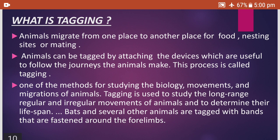Now we will look at a small term — what is tagging? Animals migrate from one place to another for food, nesting sites, or mating. Animals can be tagged by attaching devices which are useful to follow the journeys animals make. This process is called tagging. Tagging lets scientists follow the journeys animals make and is one of the methods for studying the biology, movements, and migration of animals, to determine their lifespan and track long-range and irregular movement. Bats and several other animals are tagged with bands fastened around the forelimbs.